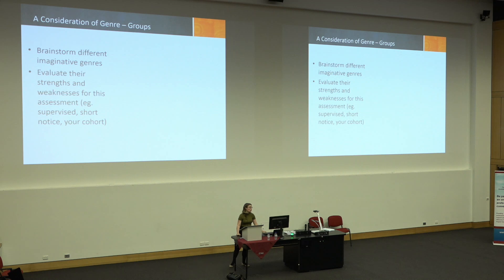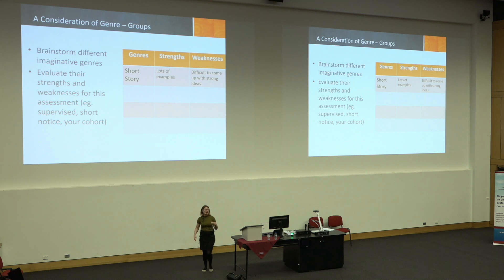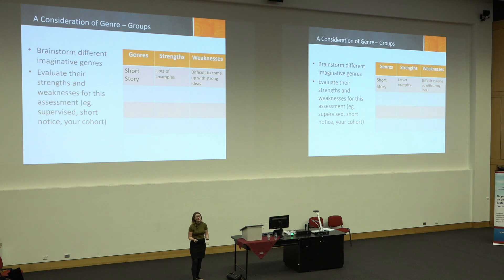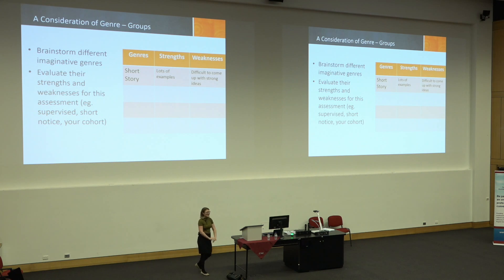Think about this for your cohort — you might have some different cohorts in your group — and consider what are going to be the strengths and weaknesses of that genre. For example, if I'm looking at a short story, a strength for my cohort might be that there are lots of examples I can show students. A weakness is that my students really struggle to come up with ideas for a short story in a very short amount of time to plan that activity. I'm going to give you some time in your groups to fill out that table and have a discussion of genre.